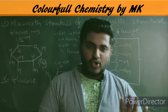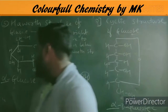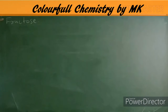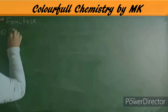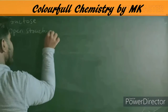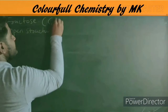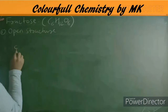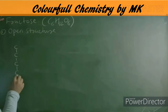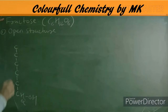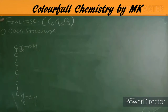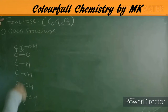Now we will study open structure, cyclic structure, and Haworth structure of fructose. Fructose also has the molecular formula C6H12O6 — same as glucose — but the structural formula is different. In glucose, carbon one has the aldehyde (carbonyl) group; in fructose, the functional group is a ketone at carbon two, and both carbon one and carbon six are CH2OH groups.